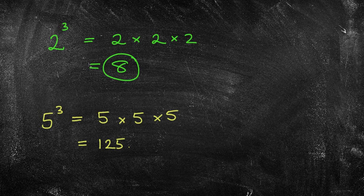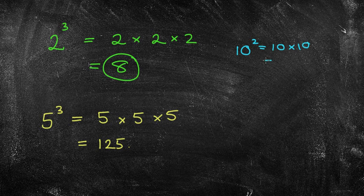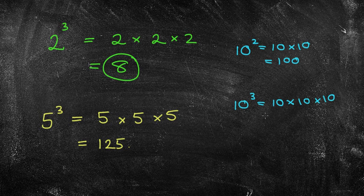So if you have a question where it's been squared — like 10 squared — that means we are multiplying it by itself just twice, which would be 100. But if we have cubed, it means we're doing the same thing but multiplying by itself 3 times, which in this case would be 1000.